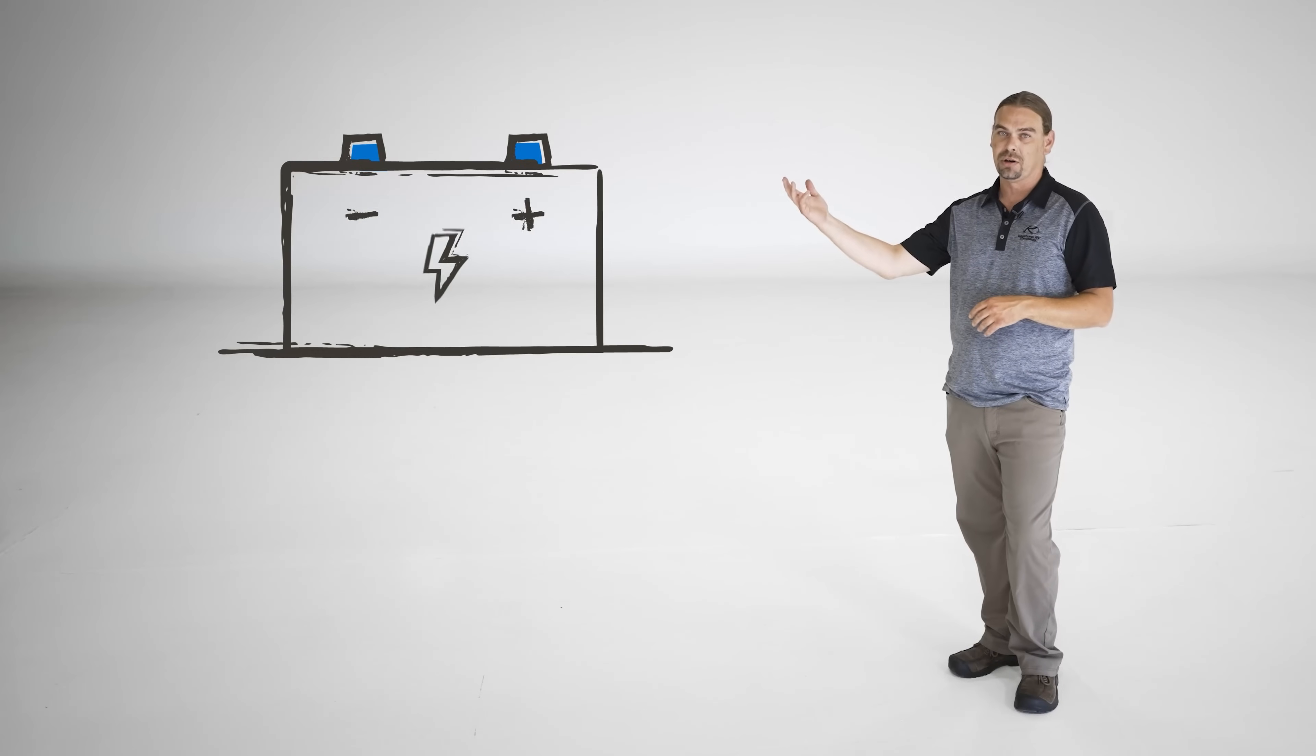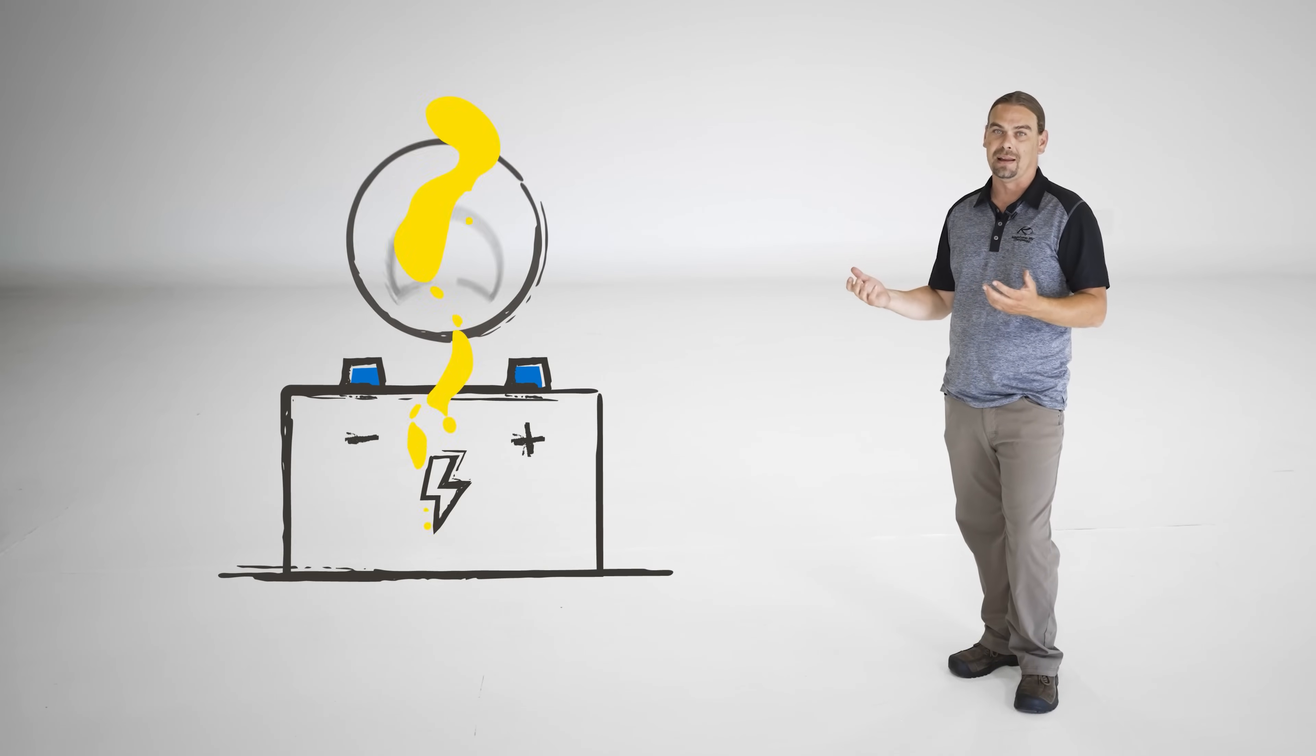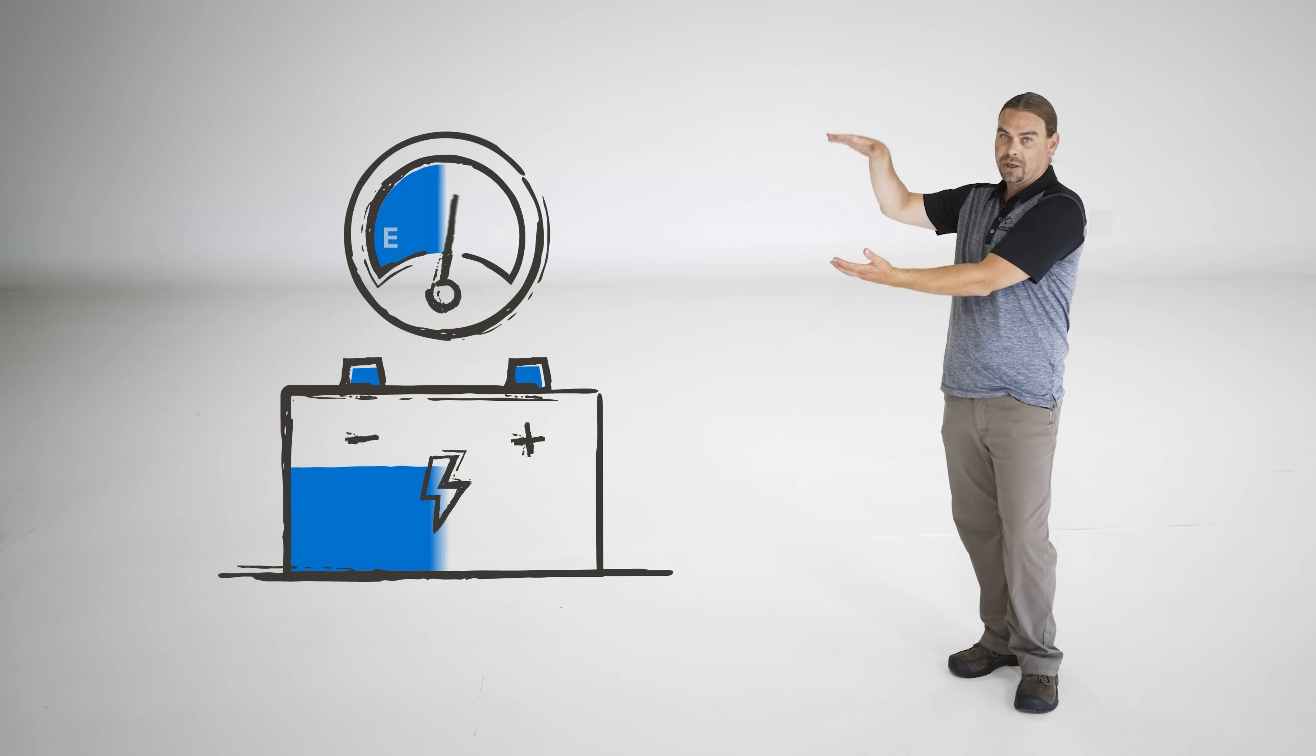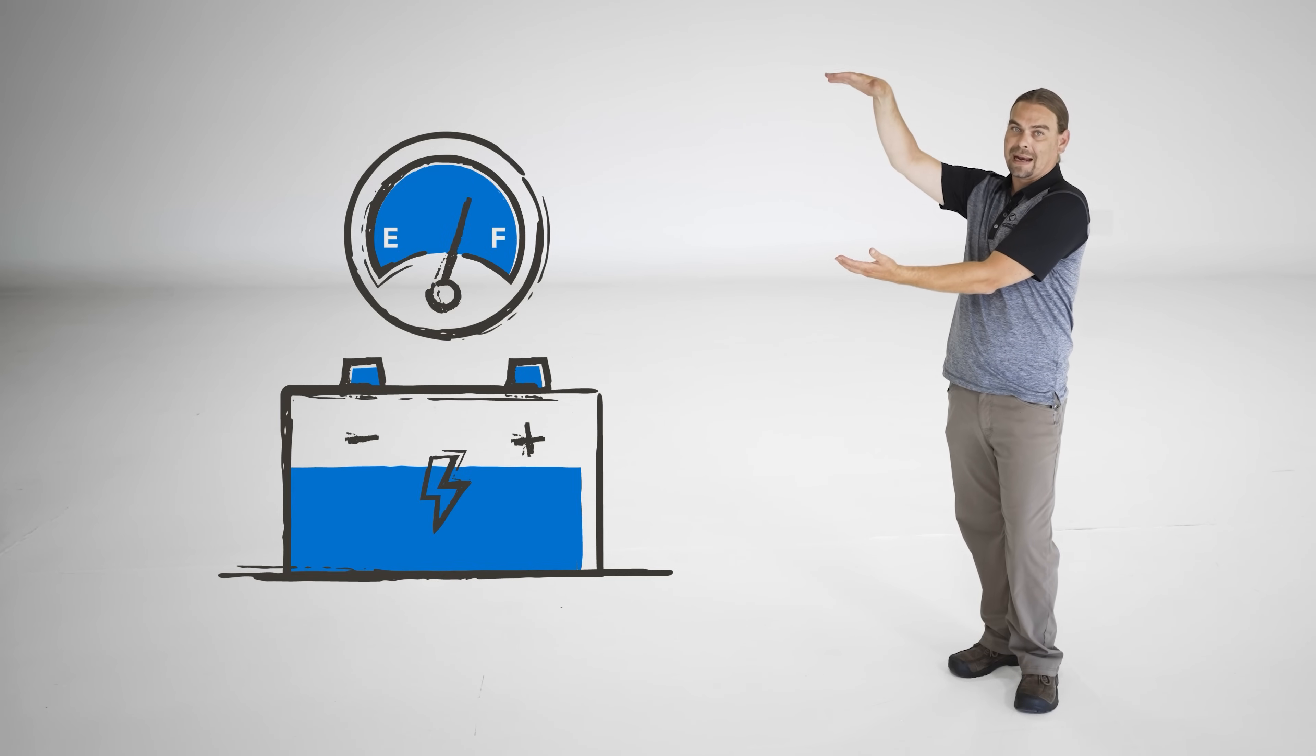It's really all about energy in and energy out. The battery in your RV stores energy. It's a lot like a gas tank because it can only hold a certain amount, and when it's used up, you have to fill it back up.